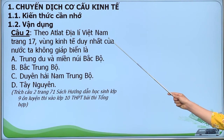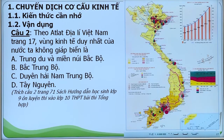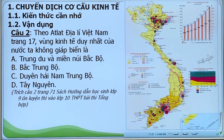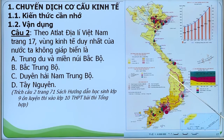Câu 2: Theo Atlas địa lý Việt Nam trang 17, vùng kinh tế duy nhất của nước ta không giáp biển là: A. Trung Du miền núi Bắc Bộ; B. Bắc Trung Bộ; C. Duyên Hải Nam Trung Bộ; D. Tây Nguyên. Quan sát vào Atlas trang 17, chúng ta có thể thấy nước ta có đường bờ biển kéo dài, đi qua rất nhiều vùng kinh tế. Chỉ có vùng duy nhất không giáp biển, đó là vùng Tây Nguyên. Câu này chúng ta chọn đáp án D.